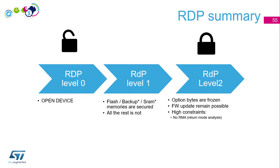RDP summary: Level 0 is an open device with no protection. Level 1 protects the flash and sometimes backup and SRAM memory; the rest — option bytes, peripheral registers, and often SRAM — can still be accessed. Level 2 freezes all option bytes; firmware update is still possible but requires an in-application programming solution implemented beforehand, since only the core can write to flash. Level 2 offers no return mode analysis — even ST cannot reopen an RDP level 2 device or dump the flash content. Level 2 is the most secure but permanently closes the device.